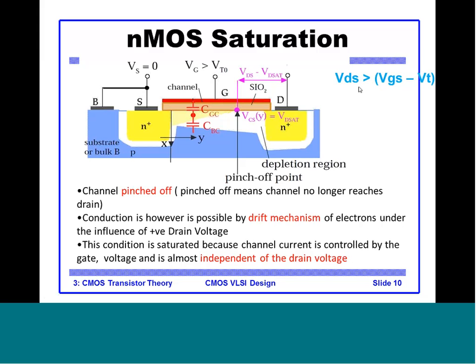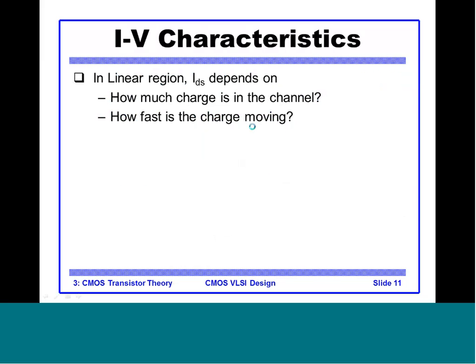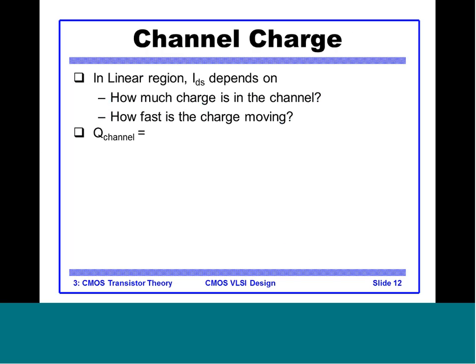In the ideal case, drain current is linearly dependent on drain voltage when NMOS is in the linear region, and it saturates when VDS approaches VDSat. If VDS is increased beyond VDSat, drain current remains constant. Combining all three regions, we can make an IV curve — plotting voltage versus current to see how current is affected by voltage. We will see the IV characteristics in a later slide.